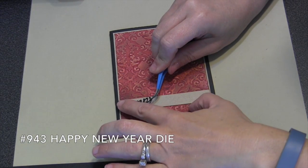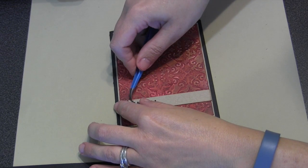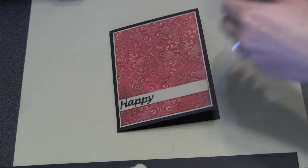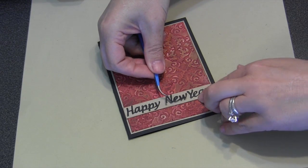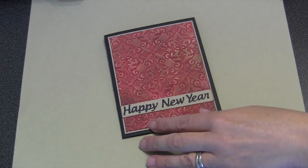Then I'm using the Elizabeth Craft Designs Happy New Year die, and once again, double-sided adhesive. If you do that on the back of the black cardstock before you die cut, it makes it really easy—they are just a sticker now.